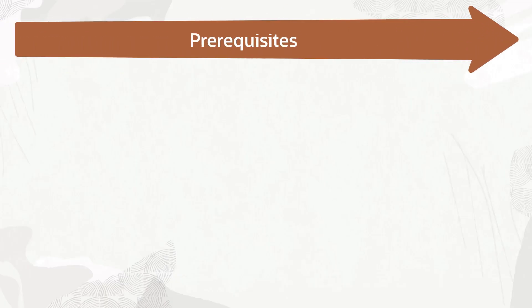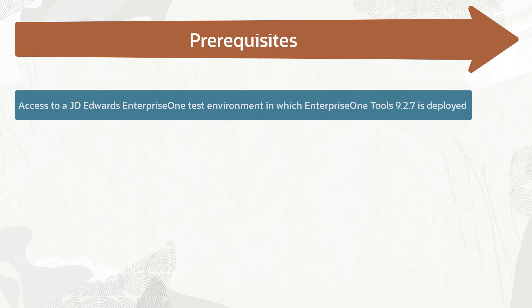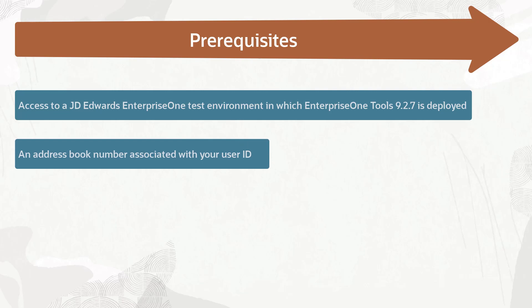Before performing the tasks in this tutorial, you must ensure that you have access to a JD Edwards Enterprise One test environment in which Enterprise One Tools 9.2.7 is deployed. The JD Edwards Enterprise One trial edition deployed on Oracle Cloud Infrastructure meets this requirement. Also, you have an address book number that is associated with your user ID.